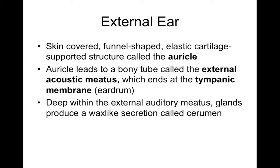Within the external acoustic meatus, there are little glands called ceruminous glands that secrete cerumen, which is basically earwax. These are modified sebaceous glands that create earwax. Because it's wax, it's hydrophobic or water-fearing, which helps repel water and keep water from staying inside your external acoustic meatus, thus preventing infection.